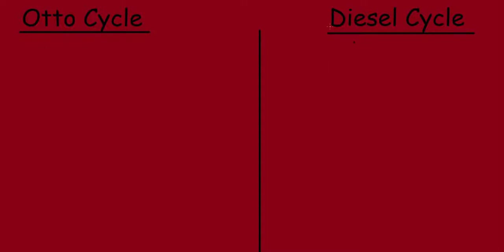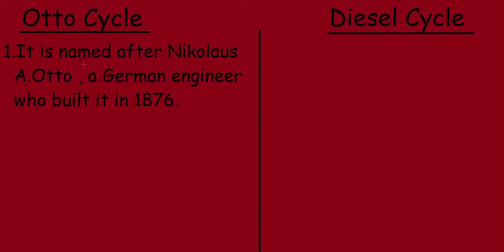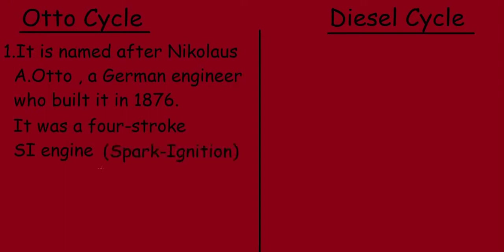Let's study the differences between the Otto cycle and the diesel cycle. The Otto cycle is named after Nicholas A. Otto, a German engineer who built it in 1876. It was a 4-stroke SI engine, where SI stands for Spark Ignition.